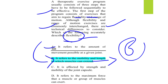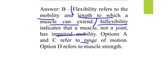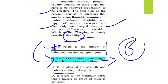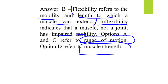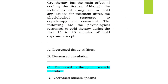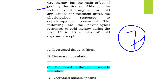Range of motion refers to the amount of movement possible at a given joint, determined by the strength and mobility of the joint capsule. Option D refers to muscle strength — the maximum force that a muscle or group of muscles can exert. That completes MCQ number six.